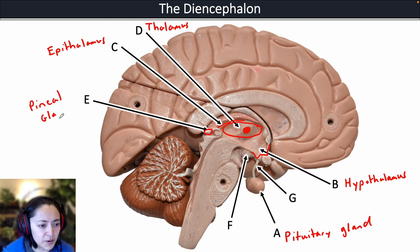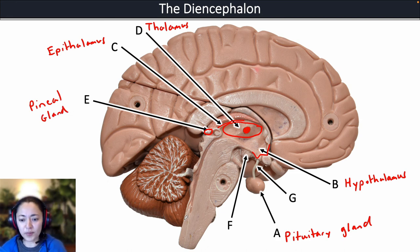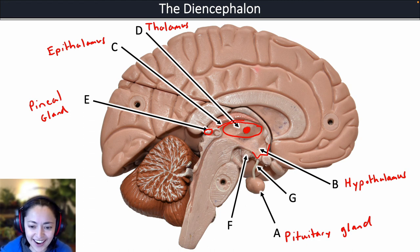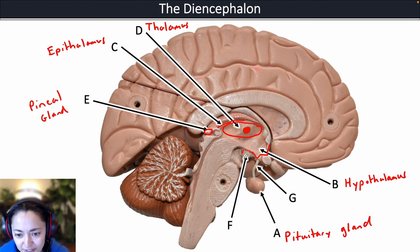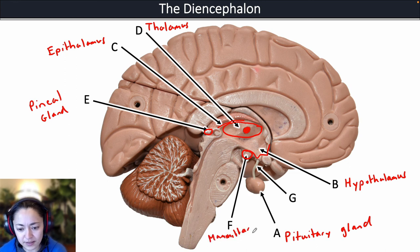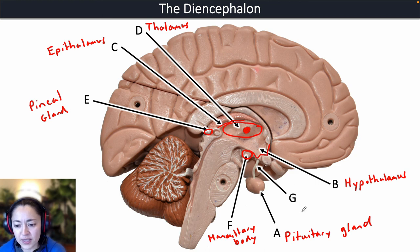F is pointing to the small structure down here, which is the mammillary body. G is pointing to the stalk holding the pituitary gland to the hypothalamus, which is known as the infundibulum.